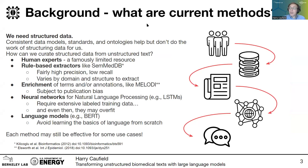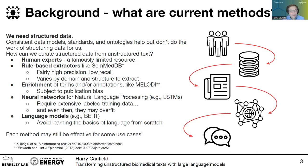If the past few decades have taught us anything, it's that we need structured data. We need consistent data models, standards, and ontologies that can help make our data more manageable and more machine-operable, but they don't do the hard work of actually structuring the data for us. So how do we curate structured data from unstructured text?